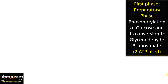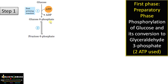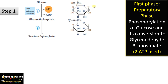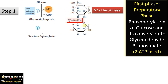It is easy to remember the reactions of glycolysis by understanding the exact reactions rather than using mnemonics. In step 1, glucose is converted to glucose-6-phosphate using ATP. At the sixth position, a phosphate group is added, and the enzyme involved is hexokinase. This is an irreversible reaction.